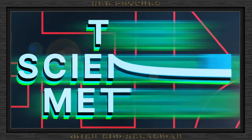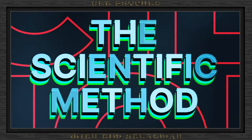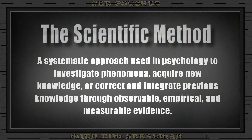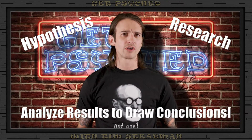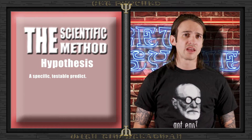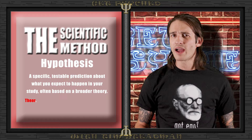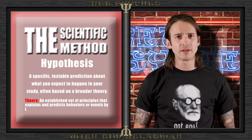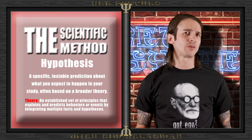Through well-designed studies and careful analysis of data, psychologists can sort fact from fiction, giving us true insights into human behavior. How do we ensure our research produces accurate results? Enter the scientific method — a standardized, step-by-step process that guides researchers through formulating a hypothesis, conducting research, and analyzing results to draw conclusions. The first step of the scientific method is crafting a hypothesis.